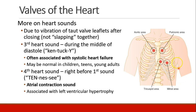Each of the four valves can be best heard in a different place on the chest wall, with the aortic best heard on the right upper sternal border at the second intercostal space, pulmonic on the left side of the sternum, and tricuspid and mitral down closer to the fifth intercostal space.